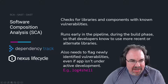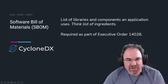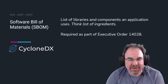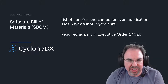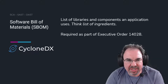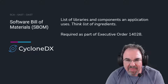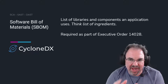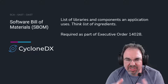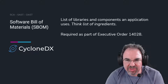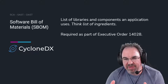The next acronym goes with SCA — it's used very much in conjunction with it — and that's the SBOM, the Software Bill of Materials. That list of libraries and components that you use, the frameworks that you use — that list of ingredients — that's the Software Bill of Materials.